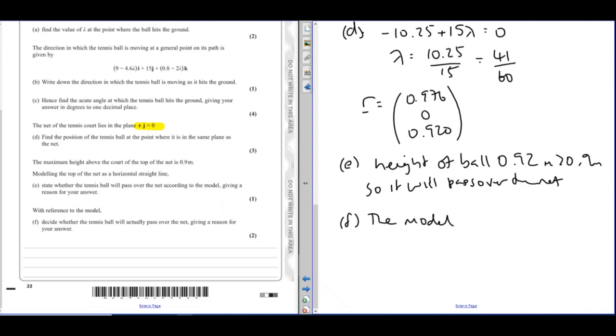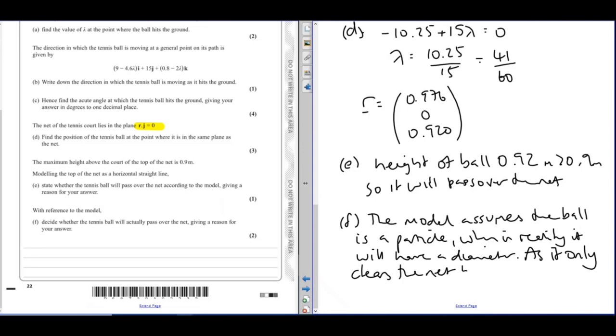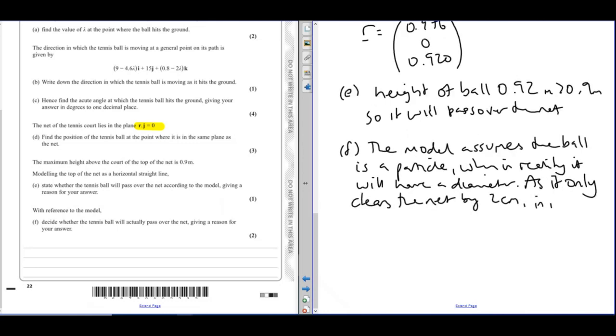The model assumes the ball is a particle, when in reality it will have a diameter. It only clears the net by 2 centimeters. In reality, it may hit the top of the net.